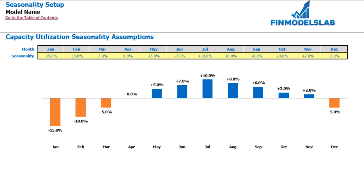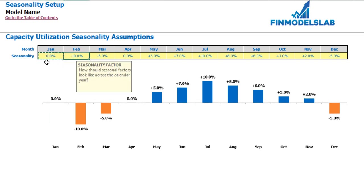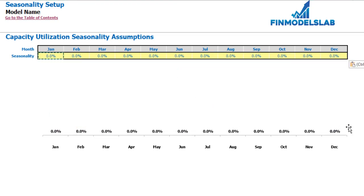On the seasonality tab you can set up your capacity utilization seasonality assumptions across the months. The dashboard previously set up the average capacity utilization by years, and here you may adjust it for different months. For example, minus 10% means that if you have 50% average capacity utilization, you multiply by 0.9 and get 45% for February. Plus 10% in July means you multiply by 1.1 to get 55%. If you don't need seasonality, just put 0 across all months and it will be flat.